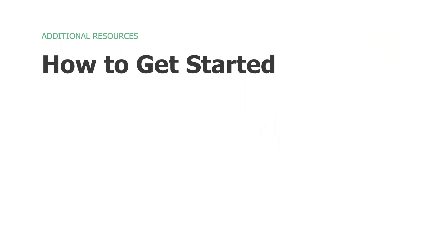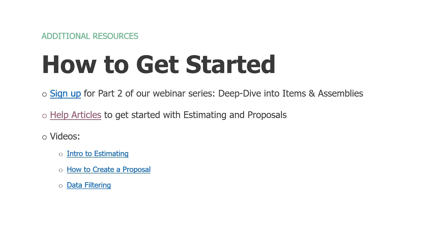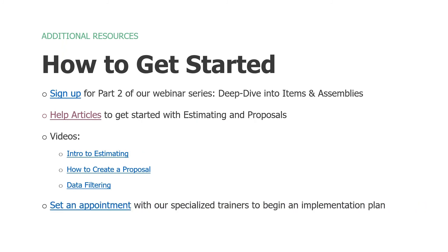That sounds fantastic. So how do you get started? Obviously sign up for parts two, three, and four, and learn more as Troy mentioned — a deep dive into those areas we looked at briefly today. Check out some of the help articles that are available to you in the product. We have a number of videos you can access, and you can set up an appointment to talk to some of our specialized trainers. You'll notice these are all linked — you can't get to them on this screen, but you can in that handout I mentioned earlier. Download it and all these links will be active.